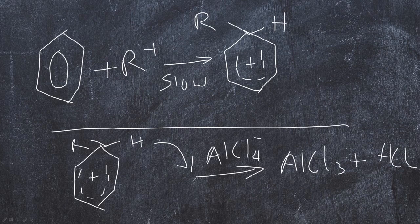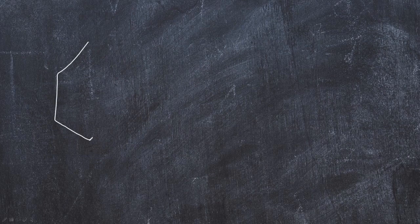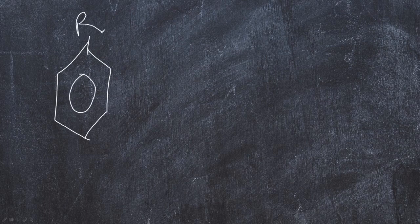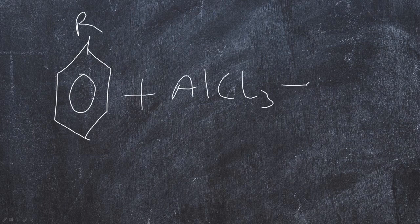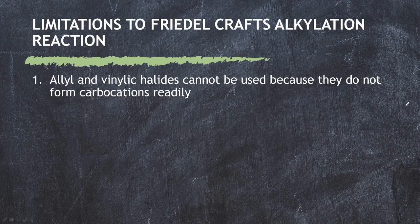The products formed are: first, an alkyl benzene — the R group could give methyl benzene (toluene) and so on. The next product is aluminium chloride, which acts as a catalyst and remains unchanged. Then hydrogen chloride gas, or hydrochloric acid if in solution. Those are all the products of the Friedel-Crafts alkylation reaction.